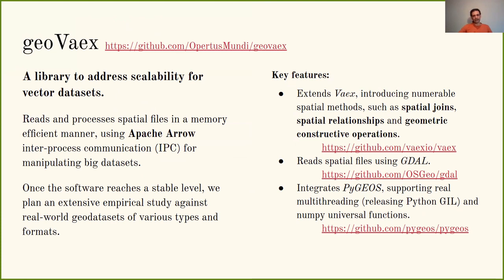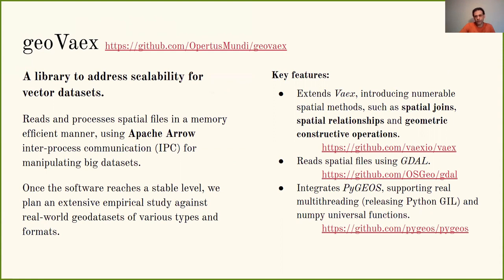Once the software reaches a stable level, we plan an extensive empirical study. Our preliminary results show that it scales very well for large datasets. The key features for GeoVIEX are that it extends the VAEX library introducing numerous spatial methods such as spatial joins, spatial relational predicates, and geometrical structure operations. GeoVIEX natively reads and writes files in Arrow format, but in order to import and export common geospatial formats we use GDAL from OSGEO. GeoVIEX also integrates PyGEOS for geometric manipulations, which supports multi-threading and NumPy universal functions, making even single-threaded operations much faster than other approaches.